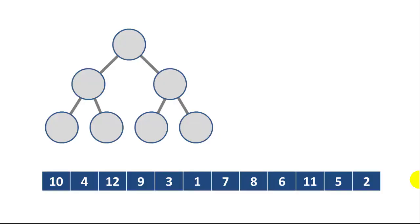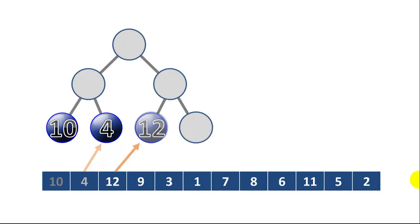So let's take a look at the Tournament Sort. Here we have a list of integers 1 through 12. And as you'd expect, we're going to have a tree to sort. So we'll start loading our integers in from the left. The 10, the 4, the 12, and the 9 are loaded into the leaf nodes.